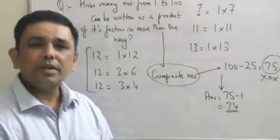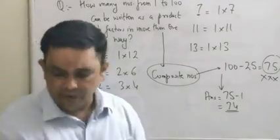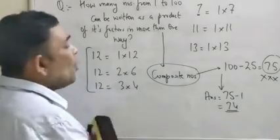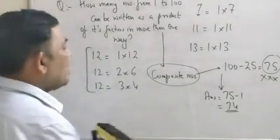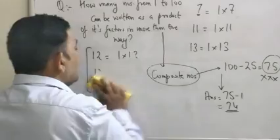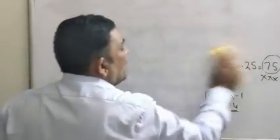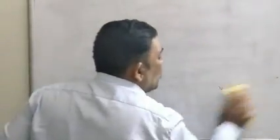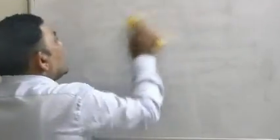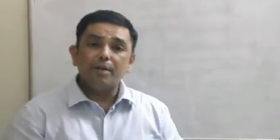Now let's come back to what we were talking about — we were looking at the properties of prime and composite numbers. The last property that you must have written was: there are 25 prime numbers from 1 to 100.